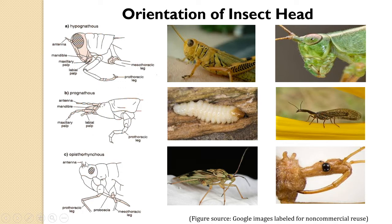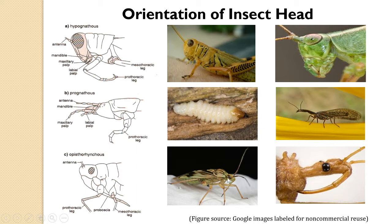The next is the opisthognathous or opisthorrhynchous condition. In this diagram you can see the proboscis. In most hemipteran insects, this proboscis is generally lodged during the resting condition into grooves located on the ventral side of the thorax and abdomen. Here the proboscis makes a less than 40 to 50 degree angle with the body axis, and such a condition is referred to as the opisthognathous condition.